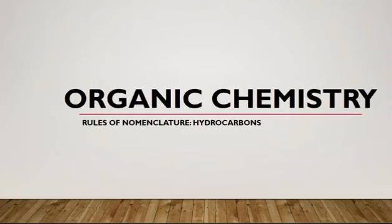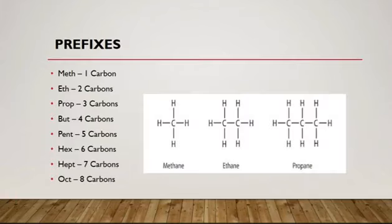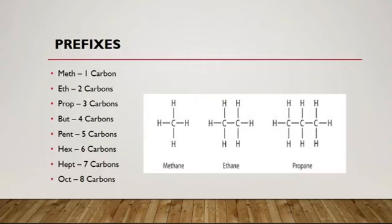In today's grade 12 lesson we're doing organic chemistry — the rules of nomenclature for hydrocarbons. The prefixes are: meth for one carbon, eth for two carbons, prop for three carbons, but for four carbons, pent for five carbons, hex for six carbons, hept for seven carbons, and oct for eight carbons. Basically, you find the longest chain and identify how many carbons are in it, then check which homologous series it belongs in.